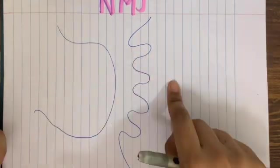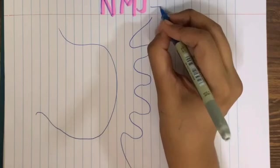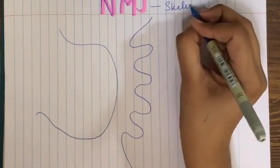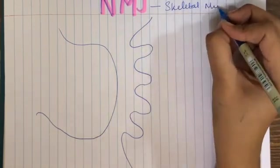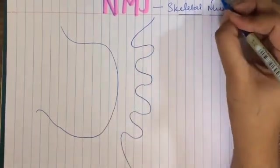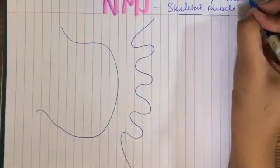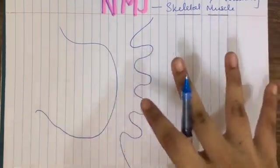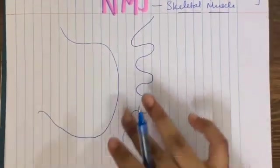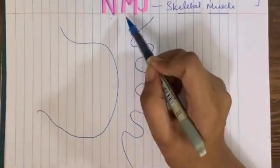We are now restricting our discussion only to skeletal muscles, and as you know, skeletal muscles are voluntary in nature. When they are voluntary, they require a signal from a neuron in order to contract and cause an activity. This signal is passed on from the neuron to the muscle through this junction known as the neuromuscular junction.